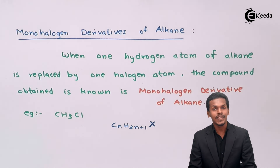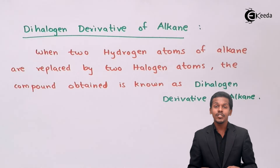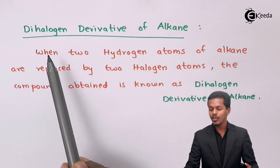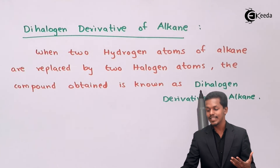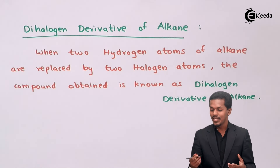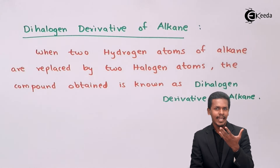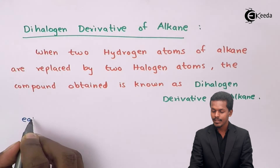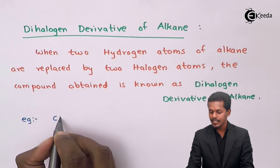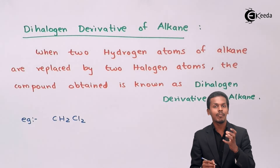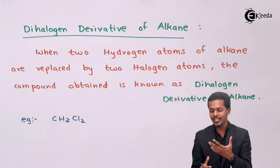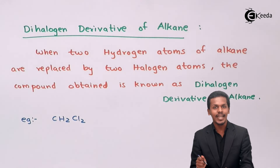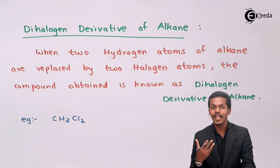Now let us talk about the dihalogen derivative of alkane. When two hydrogen atoms of an alkane are replaced by two halogen atoms, the compound obtained is known as dihalogen derivative of alkane. An example of this is CH₂Cl₂. We replaced two hydrogen atoms of methane with two chlorine atoms, and the name of this compound is dichloromethane.